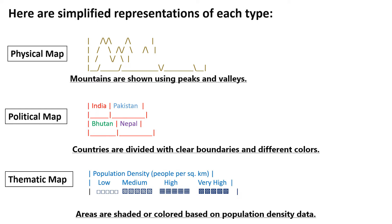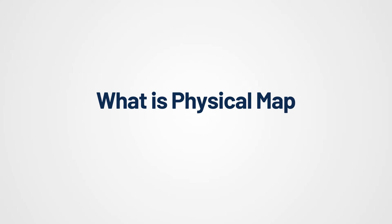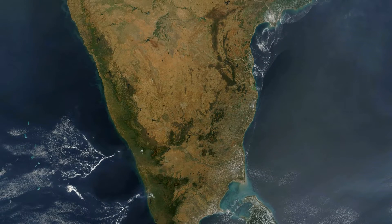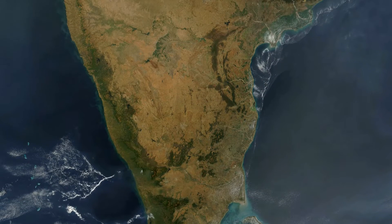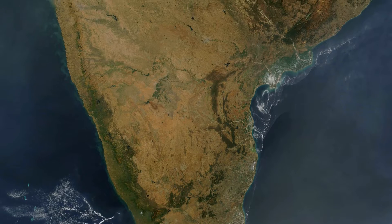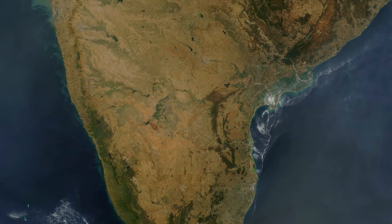Each type of map serves a distinct purpose and provides unique insights based on what you need to understand or analyze. Now, what is a physical map? A physical map is a type of map that focuses on the physical features of the Earth's surface.